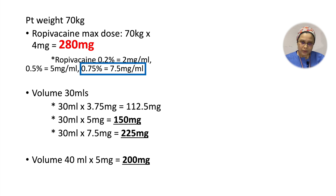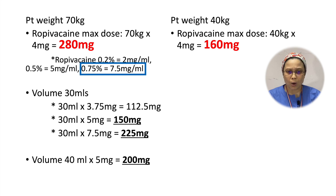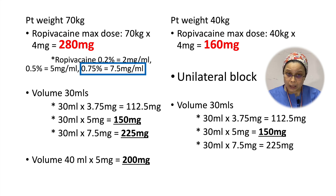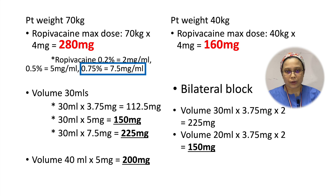For a smaller patient — say 40 kg — the maximum bupivacaine dose is only about 160 mg. For a unilateral block, giving 30 mL at 0.5% (5 mg/mL) would nearly reach the toxic dose, but it is still just below, so it is acceptable. However, if the patient requires a bilateral block, that is when the calculation must kick in — we may need to reduce both the volume and concentration of bupivacaine to avoid reaching the toxic dose.